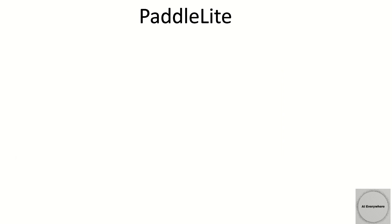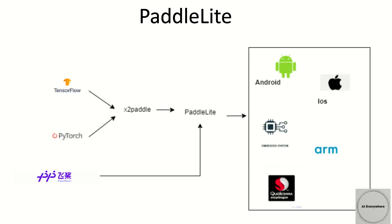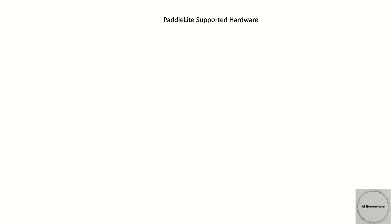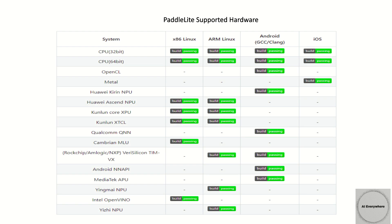The next one is Paddle Lite — an open source project by Paddle Paddle. These are the steps mostly involved in converting a model to Paddle Lite. Once the model is converted, it can then be easily deployed to any one of the edge devices. Both Android and iOS CPU as well as GPU are supported by Paddle Lite. OpenCL is currently supported for Android GPU, whereas Metal is supported for iOS GPU.